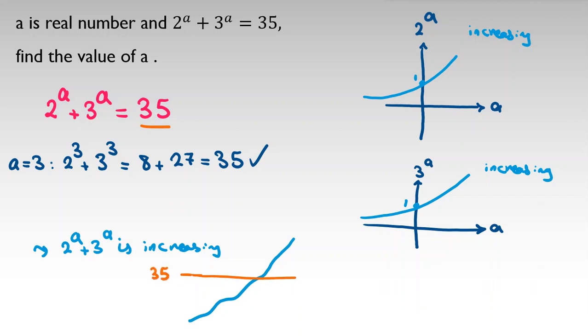35 means, for example, this horizontal line. This is 2^a + 3^a. They intersect at only one point. So we have only one answer we proved, and our answer is when a equals 3.